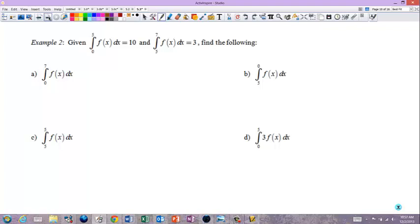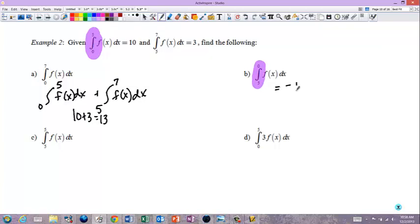It says given 0 to 5 is 10 and 5 to 7 is 3, find the following. Well, 0 to 7 can be split into 0 to 5 plus 5 to 7. So it's 10 plus 3, which is 13. Notice this one, the limits of integration are switched. So if 0 to 5 is 10, 5 to 0 would be negative 10. This one's 5 to 5. The limits are the same, so it's 0. And then I can pull the 3 out. So that's just 3 times 10, which is 30.